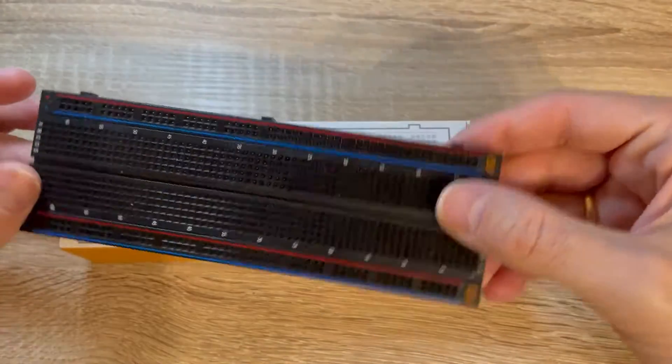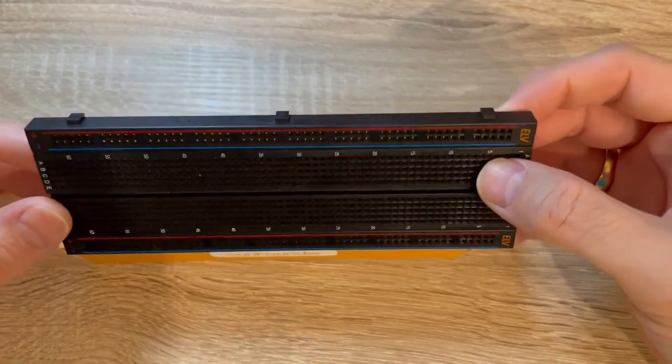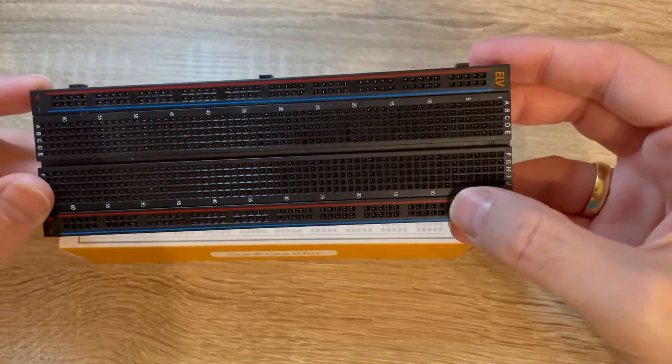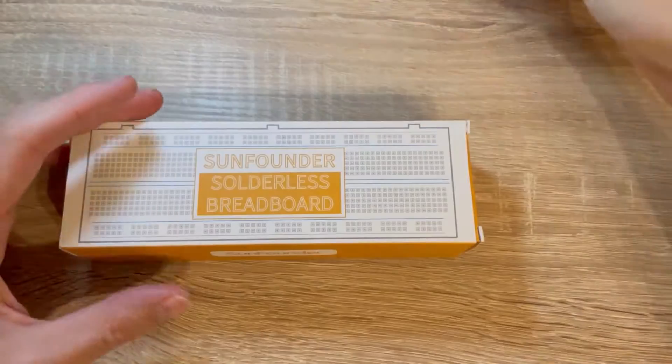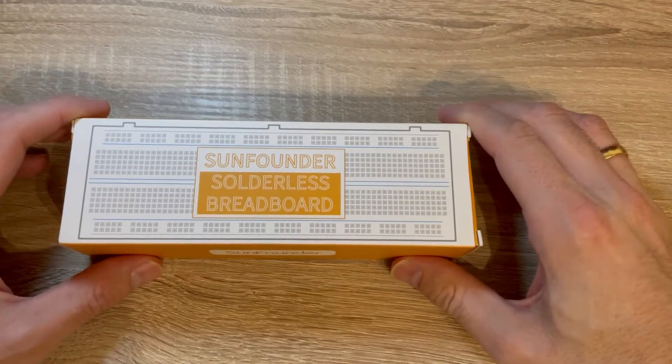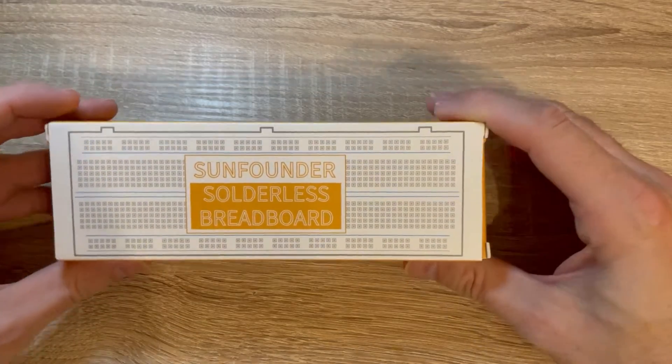Until now I had only either such a black breadboard with two supply rails of voltage at each end, or I had the small white ones which only had one supply rail.